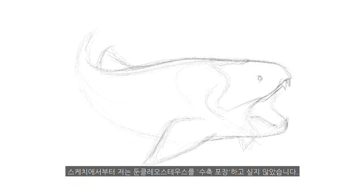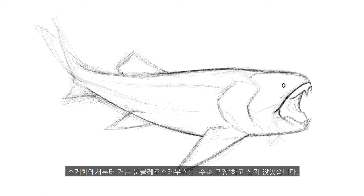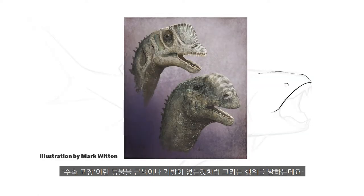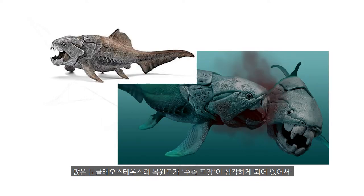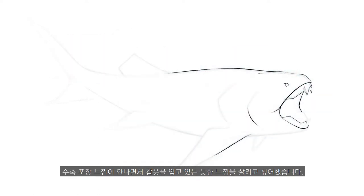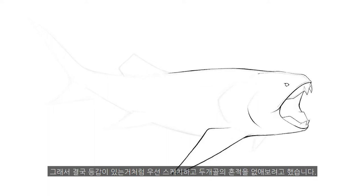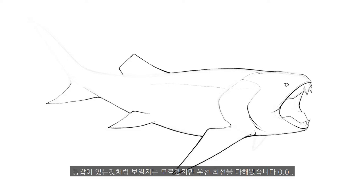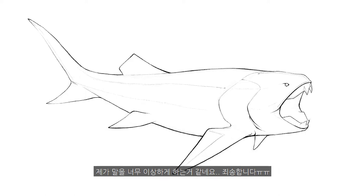Now for the sketch of Dunkleosteus, the thing I wanted to make sure was that I didn't want to make Dunkleosteus shrink wrapped. What shrink wrapping is, is basically making the animal look as if it doesn't have any muscle or fat behind the skin and bones. This is actually quite a big problem because a lot of restorations of Dunkleosteus show severe cases of shrink wrapping. I didn't want to do that, yet I still wanted to give a feeling that this Dunkleosteus was an armored fish. So I basically gave it armor panels and minimized the basic outline of the skull, yet tried to give it some armor plating. I'm just not really good with words.